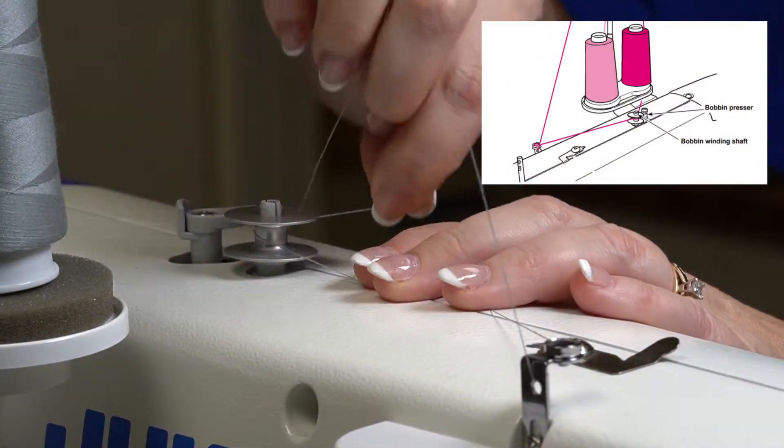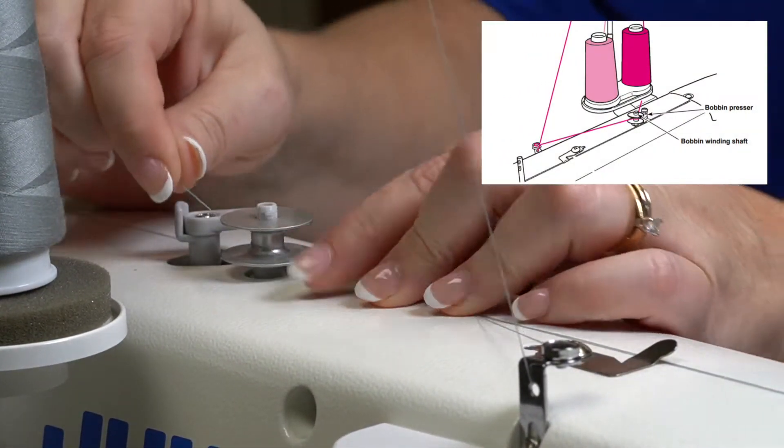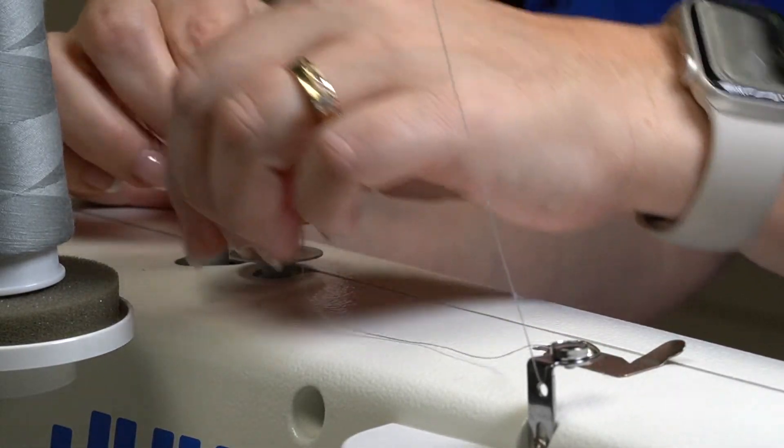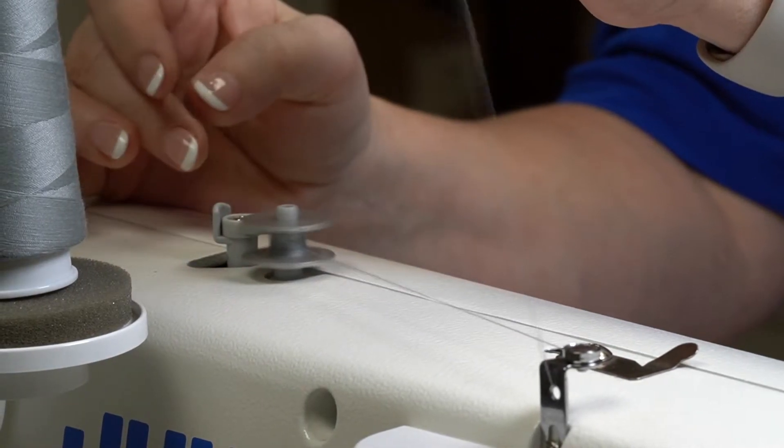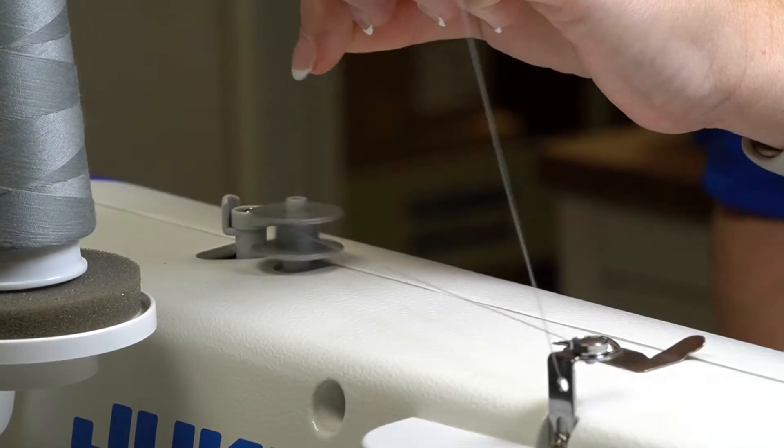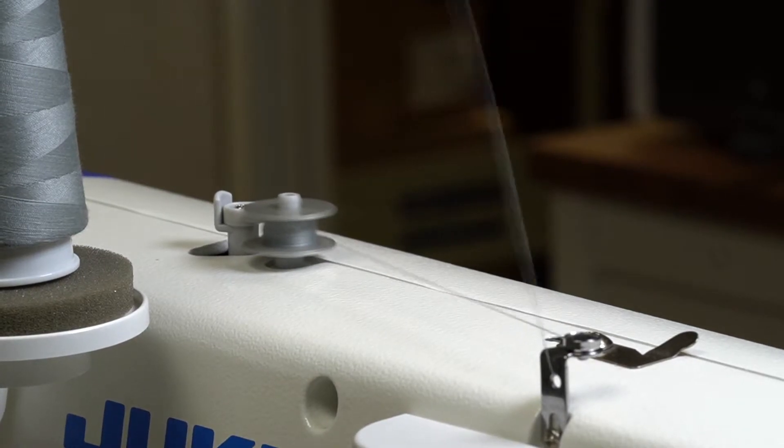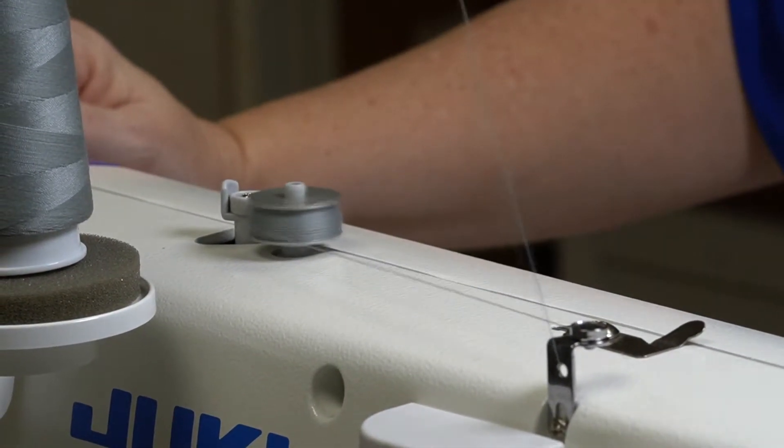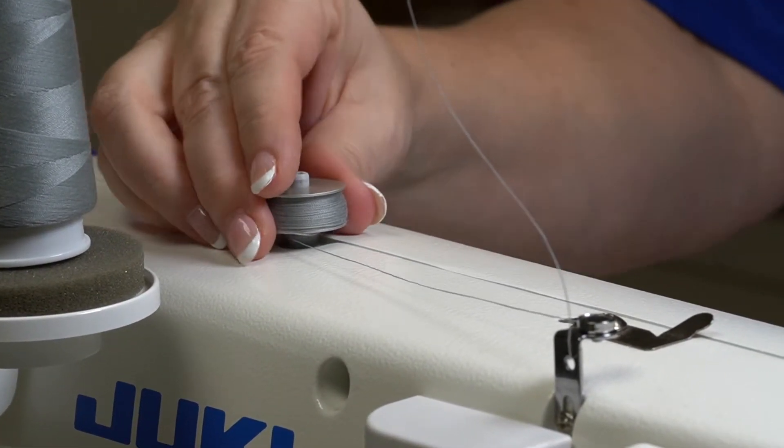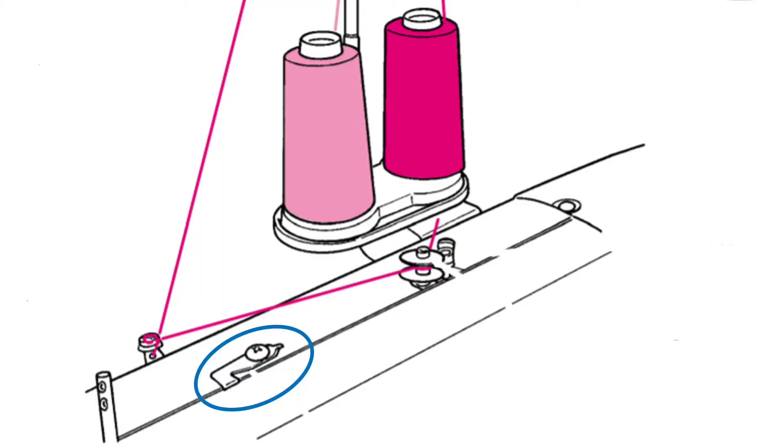Wind the thread on the bobbin clockwise by several turns. I also like to hold the tail of the thread and wind a few times in the other direction. While still holding the tail, push the bobbin lever towards the bobbin and the thread is automatically wound. Upon completion of winding the bobbin, return the bobbin presser to its home position, take off the bobbin, and trim the thread with the thread cutting knife.